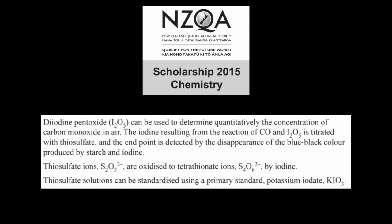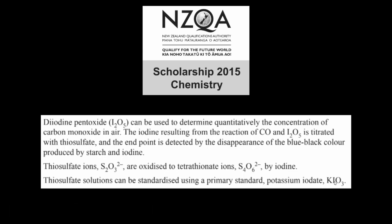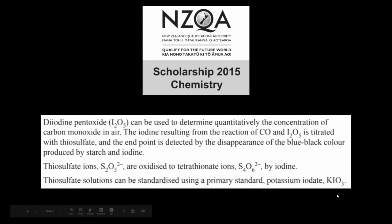We're going to do this by working backwards from a primary standard solution of potassium iodate, whose concentration we know very well. We're going to work backwards through many stoichiometric steps, applying the stoichiometric ratio to convert the number of moles of potassium iodate to something else, and eventually reaching carbon monoxide at the end.